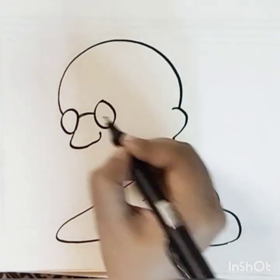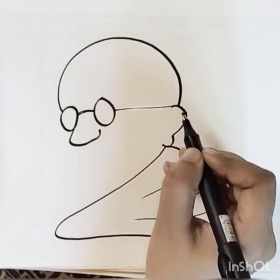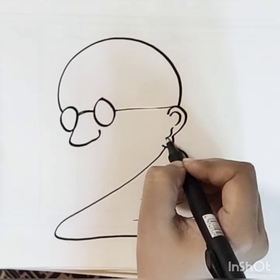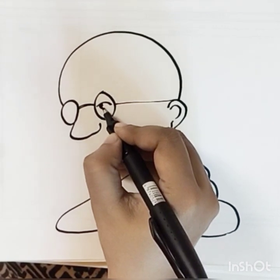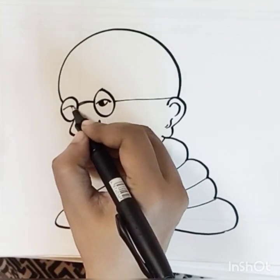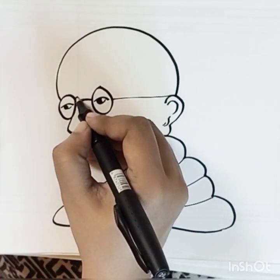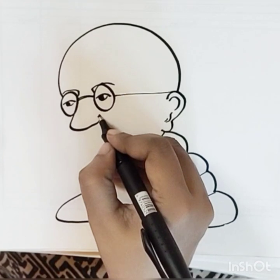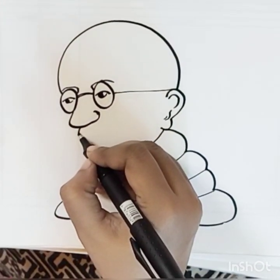First you will draw with the pencil, and after your sketch has been drawn you will draw using a black sketch pen or marker. Then give eyes, eyebrows, and then all the features of the face — the mouth.